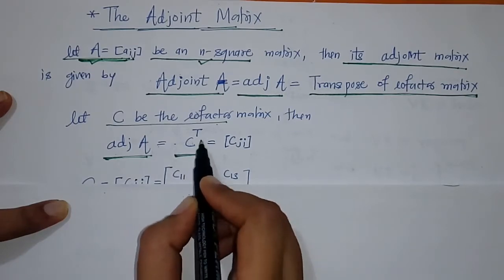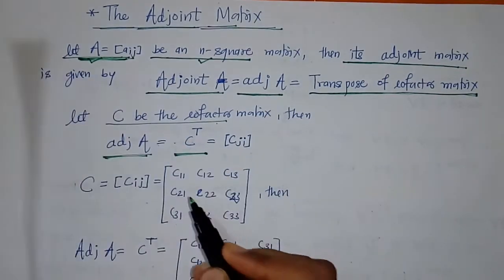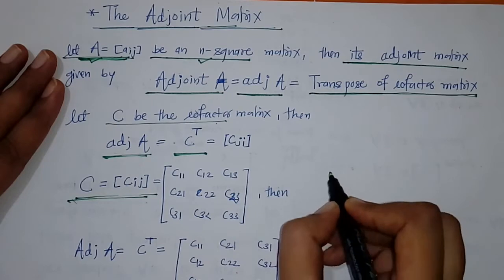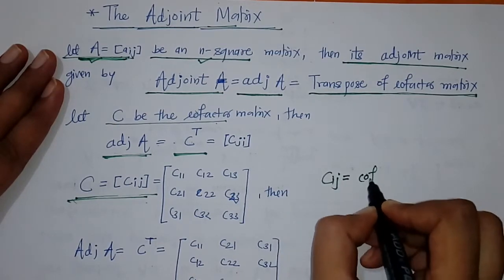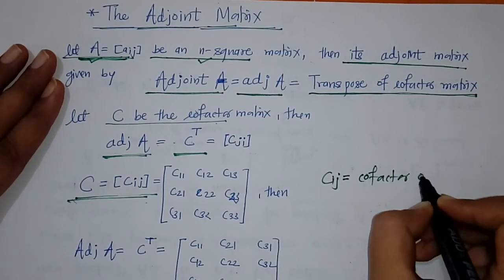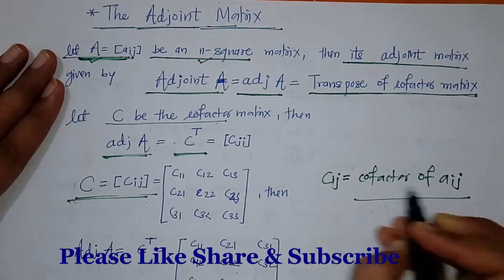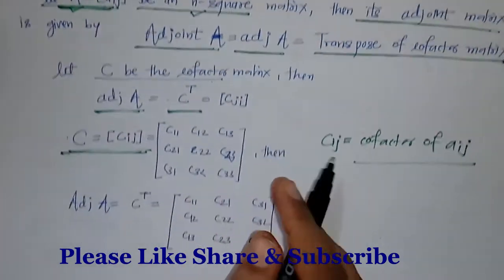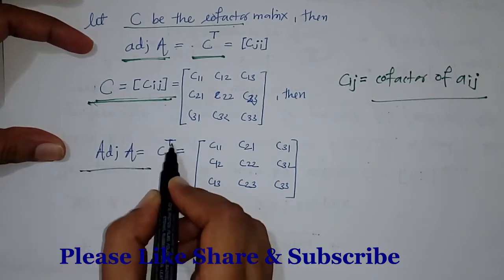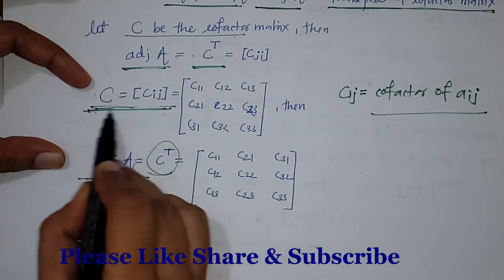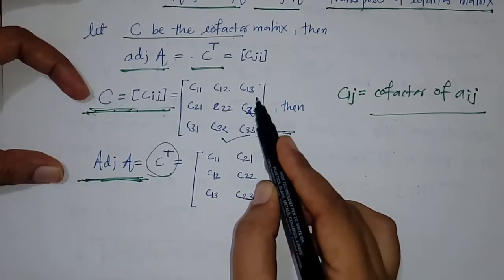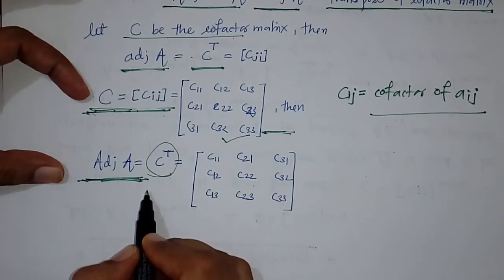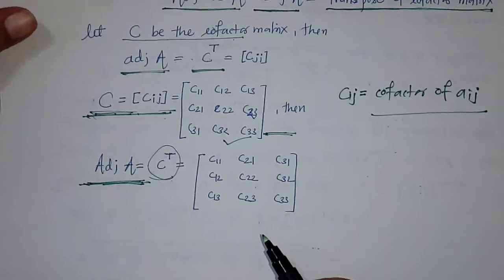The cofactor matrix C is defined where C_ij are the cofactors of A_ij. Then the adjoint of A is given by the transpose of this cofactor matrix — that means we have to interchange rows and columns — so we will get the required adjoint matrix for matrix A.